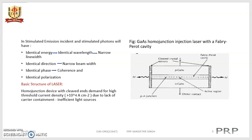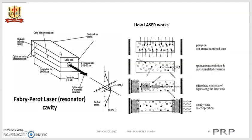Let us see the basic structure of a laser. Here we see the homo-junction device with cleaved ends, which demands a high threshold current density of 10 to the power of 4 amperes per centimeter squared, due to lack of carrier containment and inefficient light sources. This is the diagram of a gallium arsenide homo-junction injection laser with a Fabry-Perot cavity. The Fabry-Perot cavity is where the active region is located and from which light is emitted. The light beam comes out from the active site, and the two confinement layers are visible.